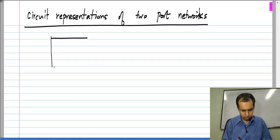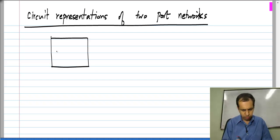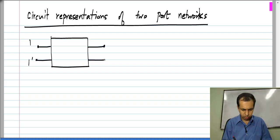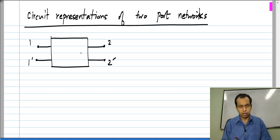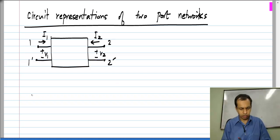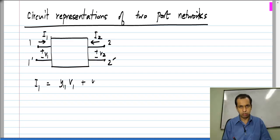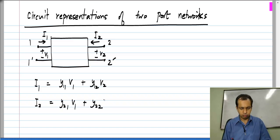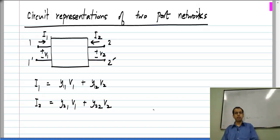Let us say we have a two-port and we choose to use Y parameters. That says that I1 is Y11·V1 plus Y12·V2, and I2 is Y21·V1 plus Y22·V2. It would be useful to have an equivalent circuit which realizes these equations.